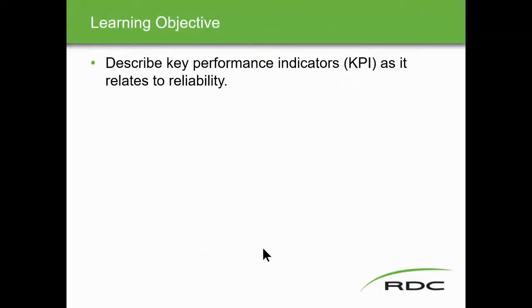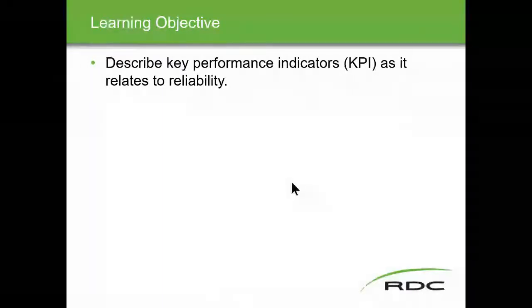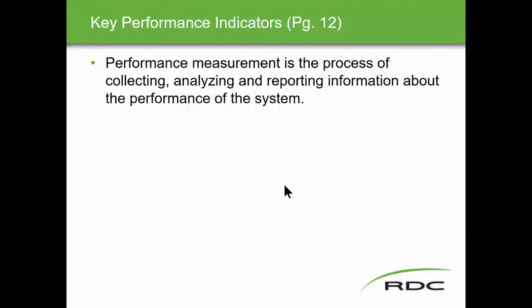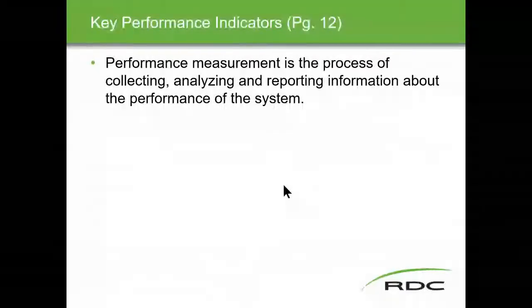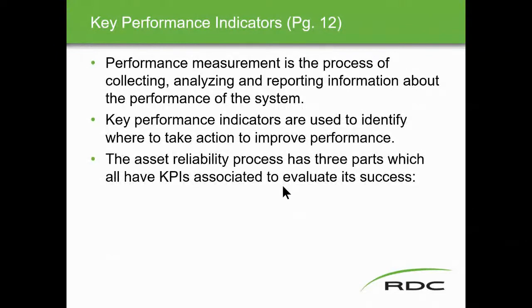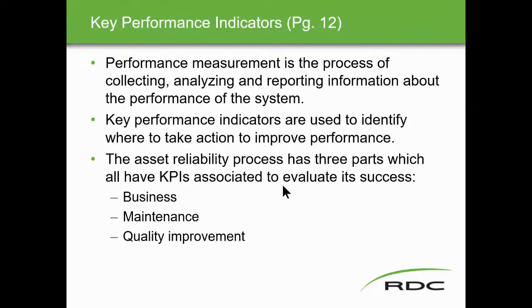Learning objective two: describe the key performance indicators. When we talk about KPIs, we're talking about how our process, how our system is working. Key performance indicators as it relates to reliability — how reliable is our plant? KPIs measure the process of collecting, analyzing, and reporting information about the performance of the system. They're used to identify where we need to take action to improve performance. The asset reliability process has three parts — all have KPIs associated to evaluate its success — and we're talking about the business plan, maintenance, and quality improvement.